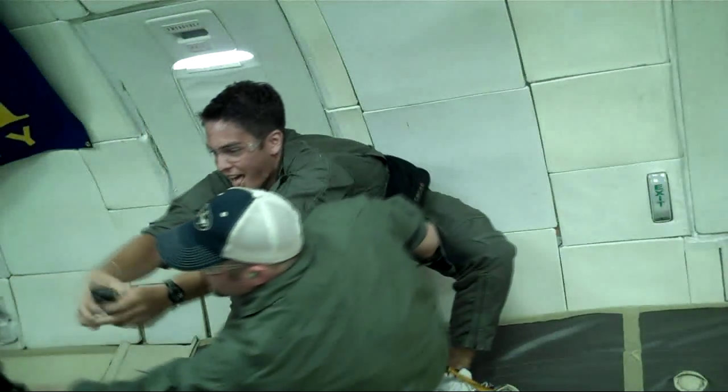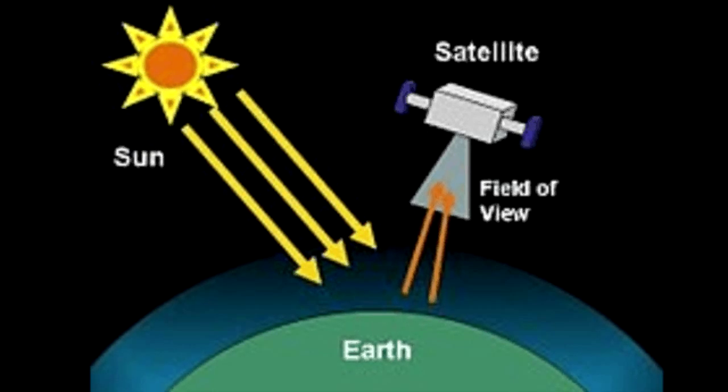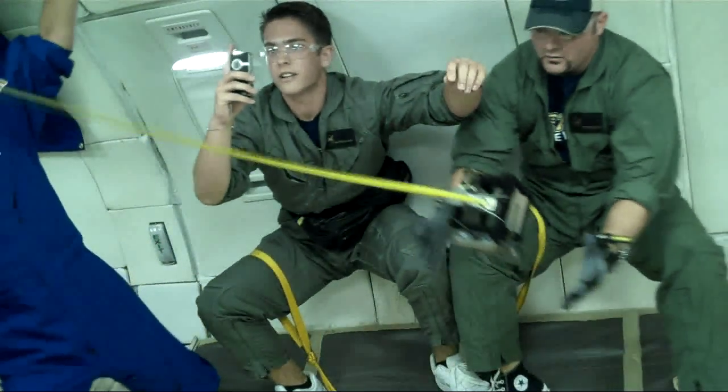Since the satellite needs an Earth-facing orbit in order to take photographs of the Earth, this would ruin the mission. In order to test the deployment and stability characteristics, it was necessary to test in a zero-gravity environment.